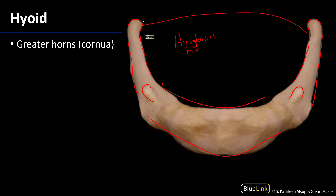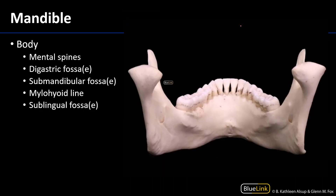One on either side going up from the hyoid bone into the tongue — so it's one of the extrinsic sets of tongue muscles.